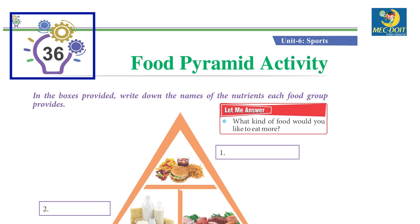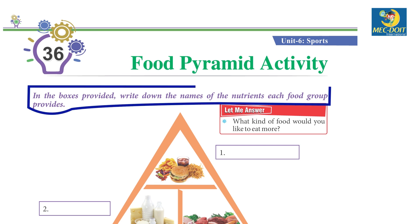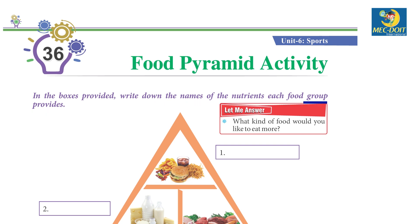Chapter 36: Food Pyramid Activity. In the boxes provided, write down the names of the nutrients each food group provides.